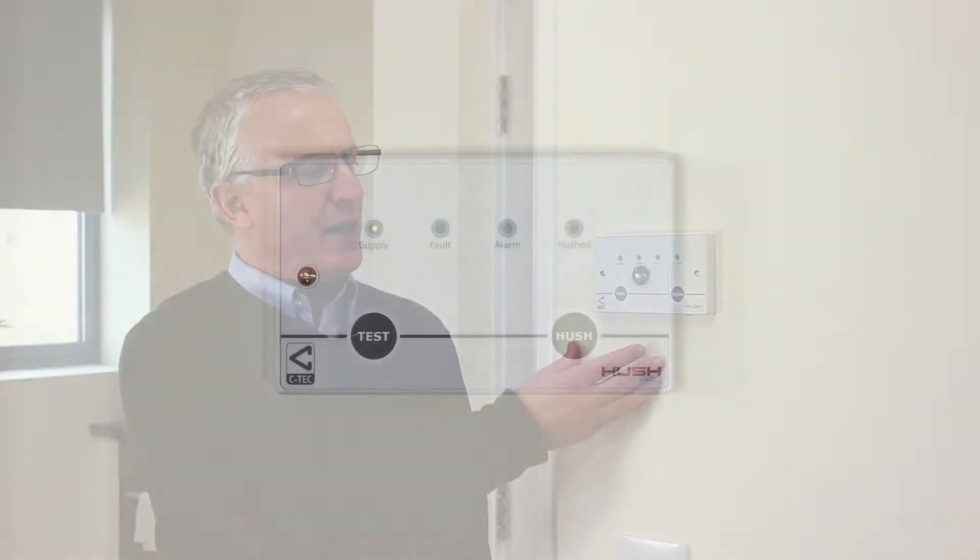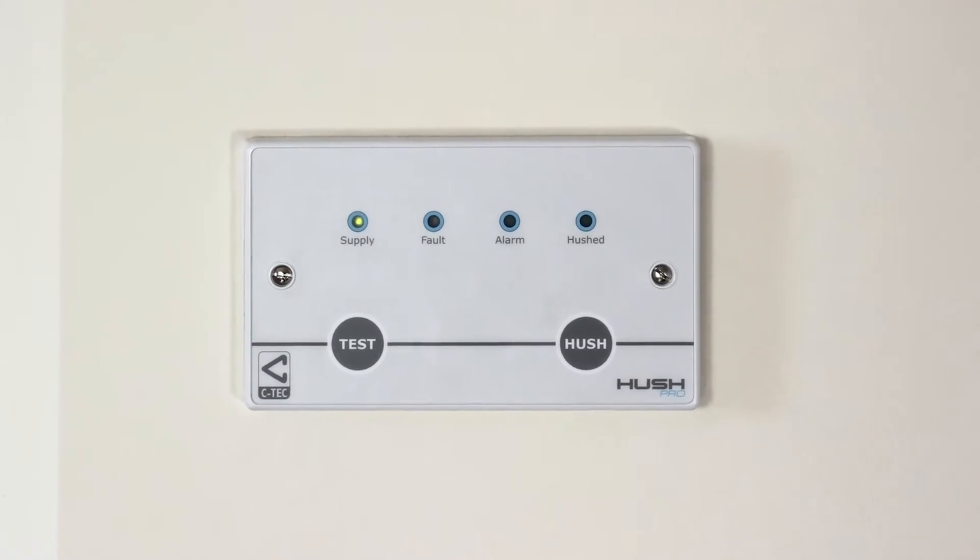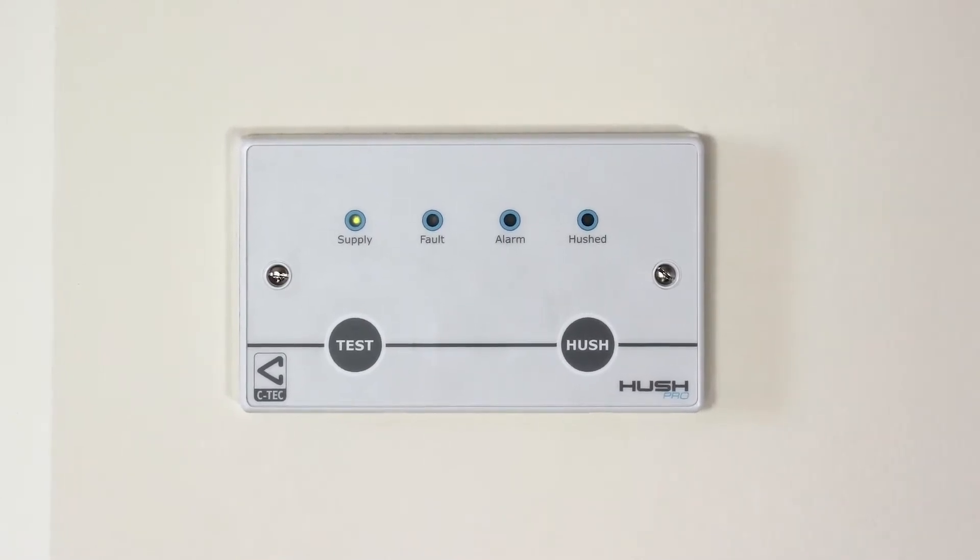Central to the system is the Hush grade C controller, which is typically located in an apartment's entranceway, as you can see here.